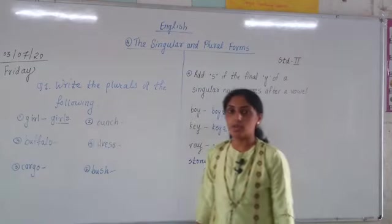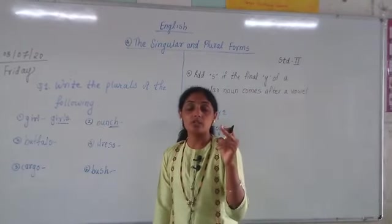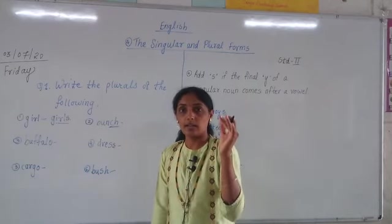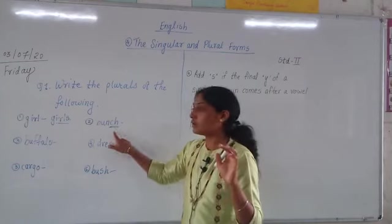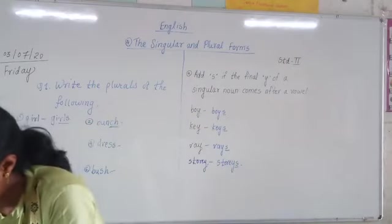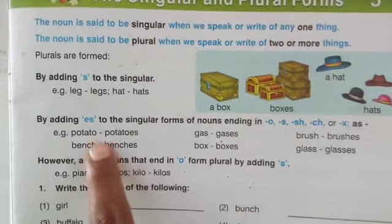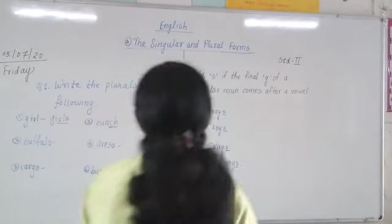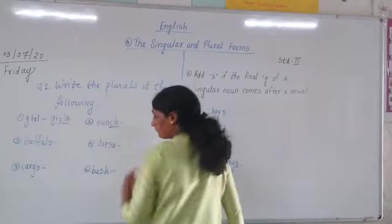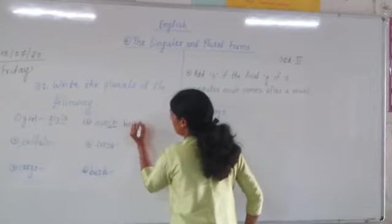The second word is 'bunch' — B-U-N-C-H. The last letters of this word are 'CH'. For words ending in 'O', 'SH', 'CH', 'X', or normal 'S', we add 'ES'. So 'bunch' changes to 'bunches' — B-U-N-C-H-E-S.